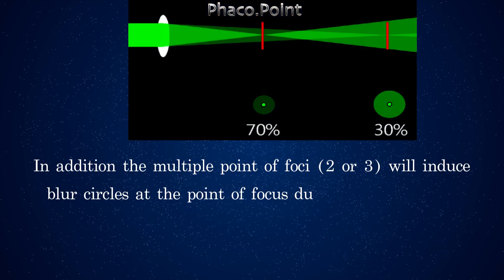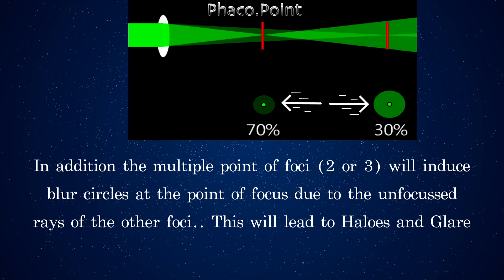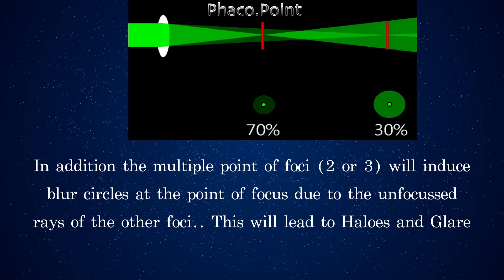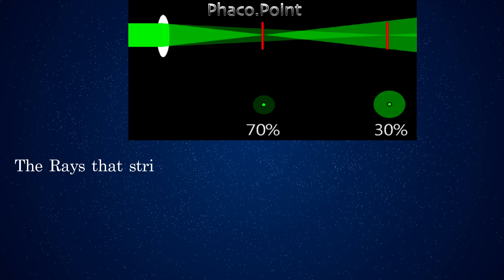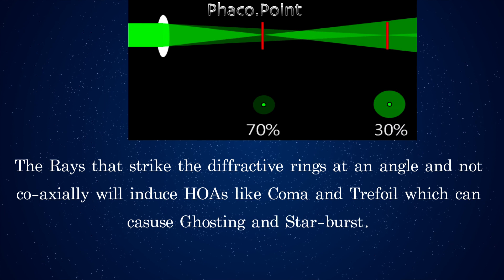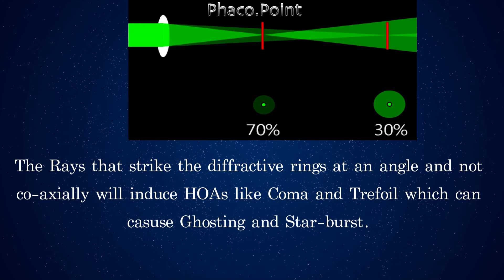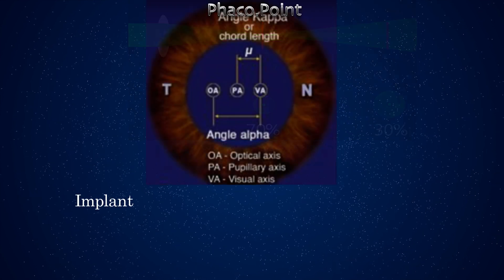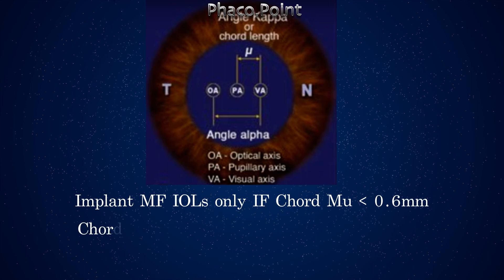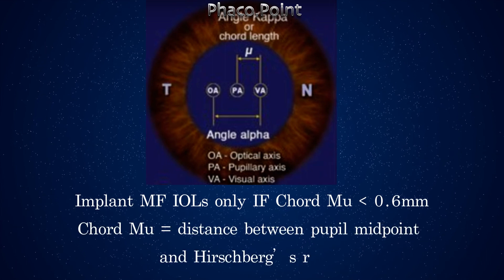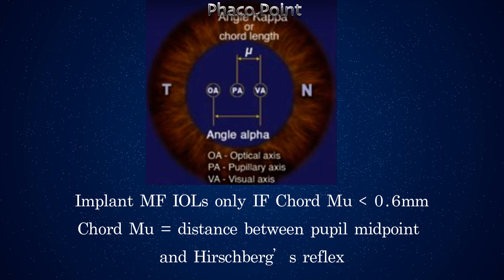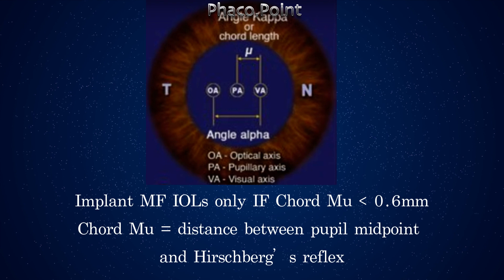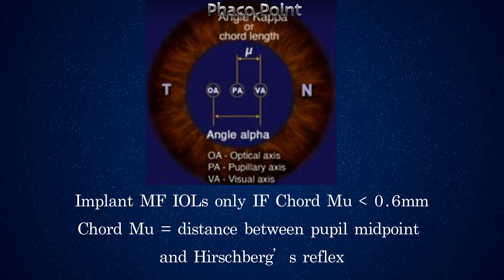In addition, the multiple points of focus — 2 or 3 — will induce blur circles at the point of focus due to the unfocused rays of the other foci. This will lead to halos and glare. The rays that strike the diffractive rings at an angle and are not coaxial will also induce higher-order aberrations like coma and trefoil, which can cause ghosting and starburst. These higher-order aberrations are rather less if the Cord Mu, or the Chang-Waring Cord length, is less than 0.6 mm.